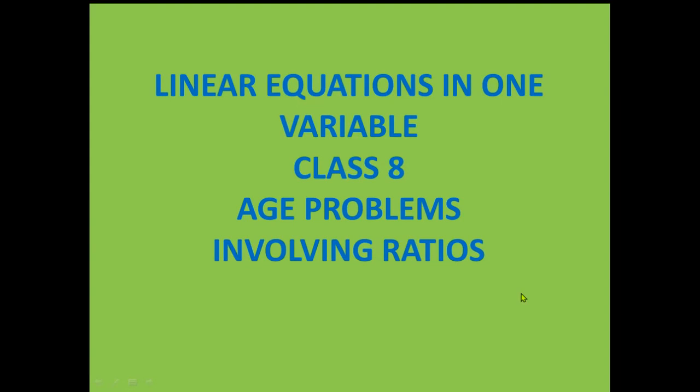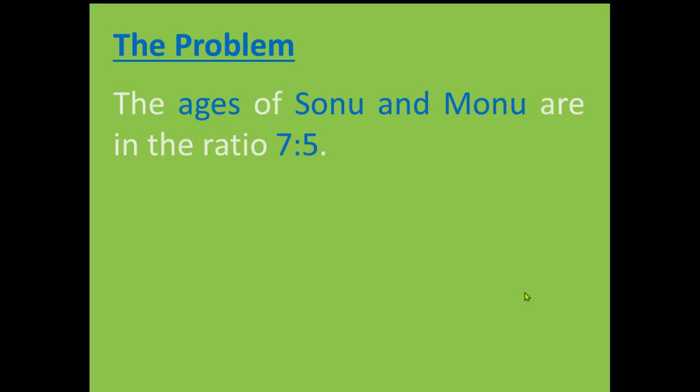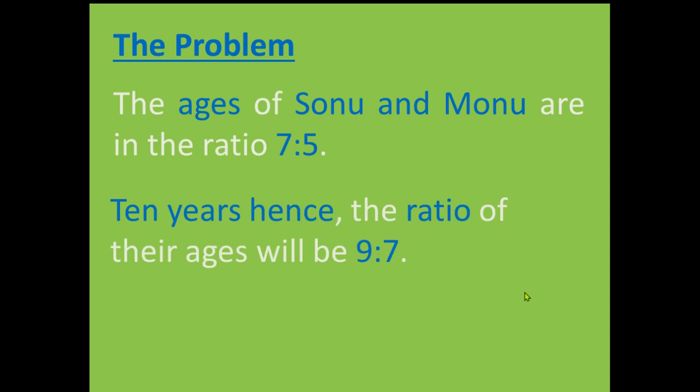I have brought this time age problems involving ratios. The problem is, the ages of Sonu and Monu are in the ratio 7 is to 5. Ten years hence, the ratio of their ages will be 9 is to 7. Find their present ages.